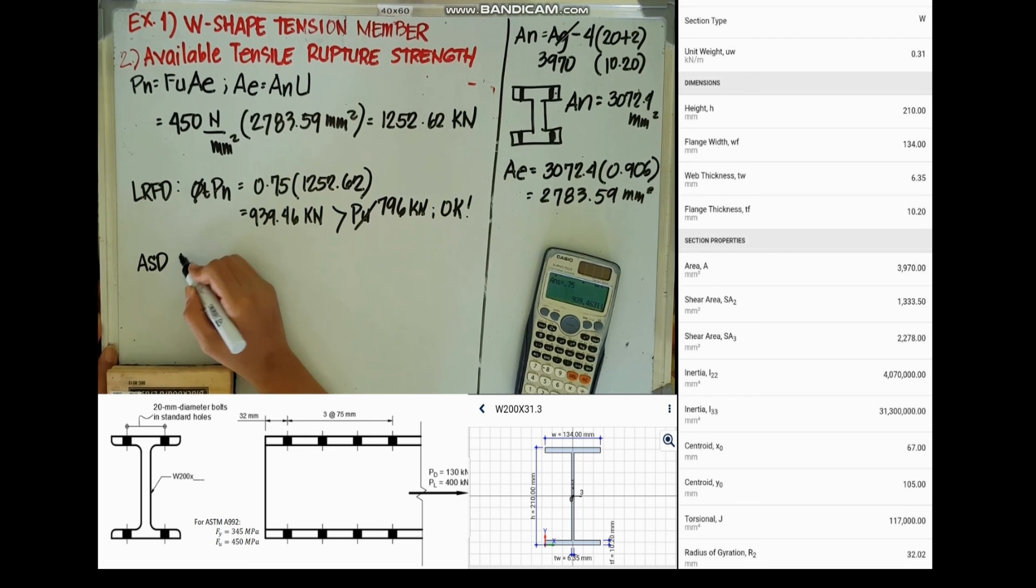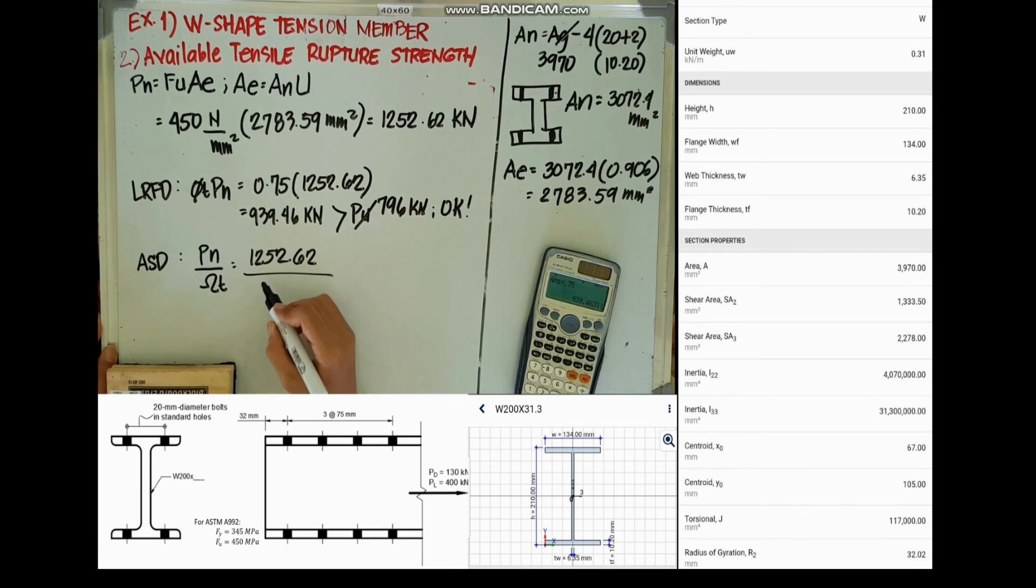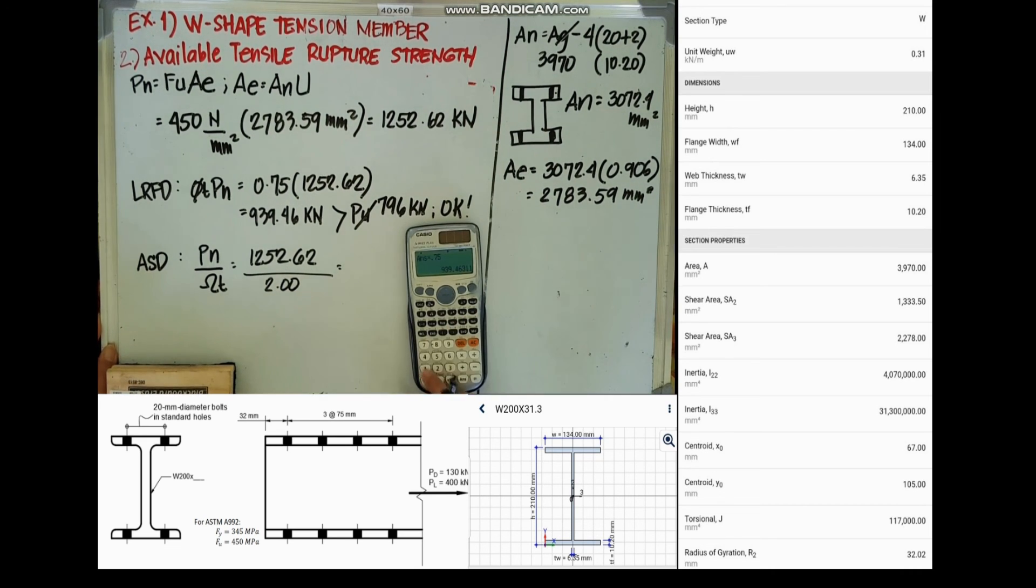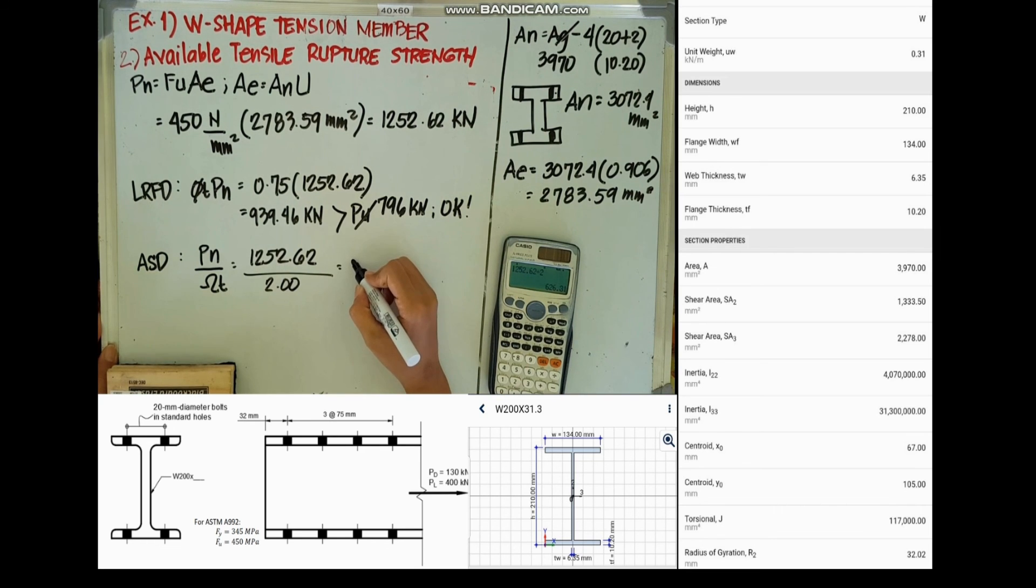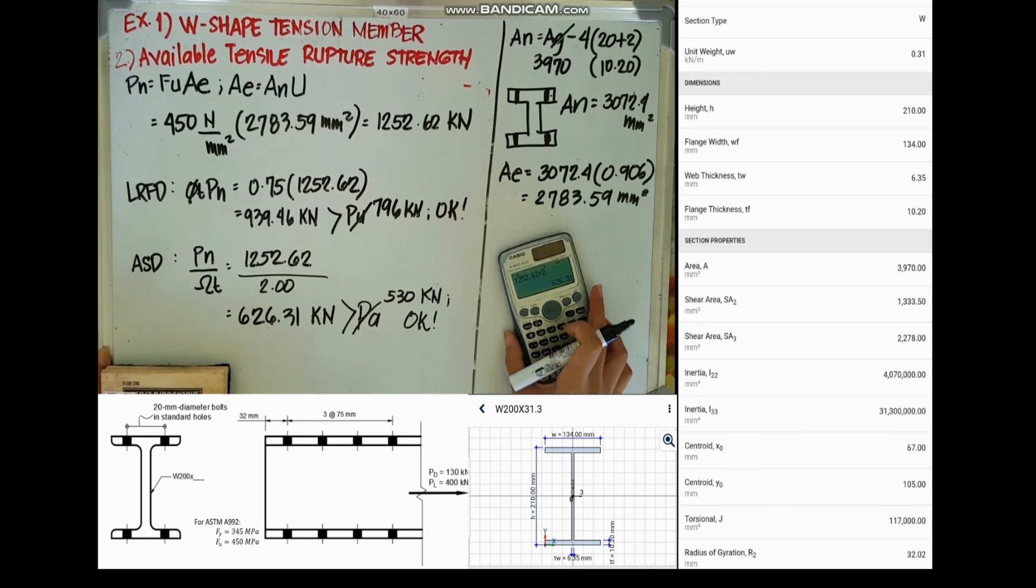And then for ASD, we will divide the nominal tensile strength by omega T. For tensile rupture it is 2.0, whereas for tensile yielding it is 1.67. It will now be equal to 626.31 kilonewtons and it's much greater than our PA which is only 530 kilonewtons, so it's okay.